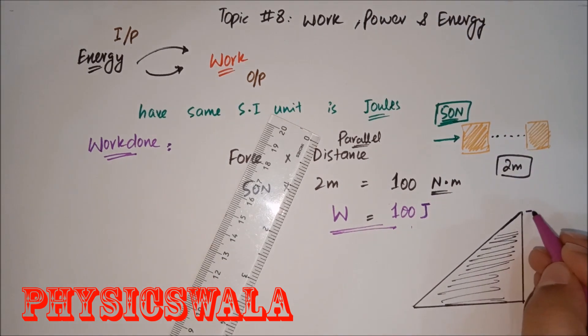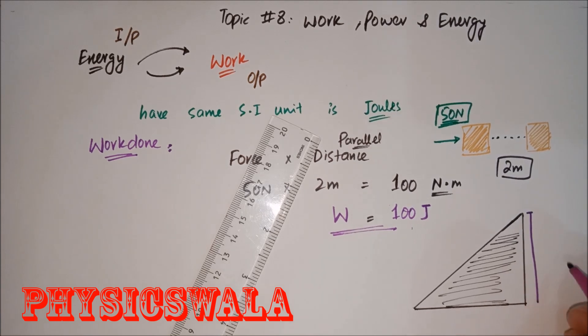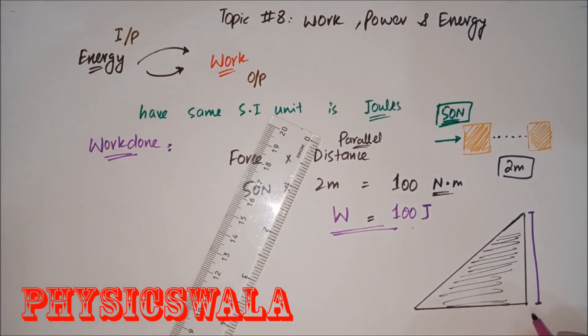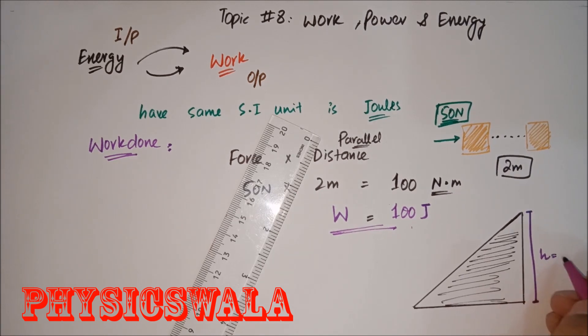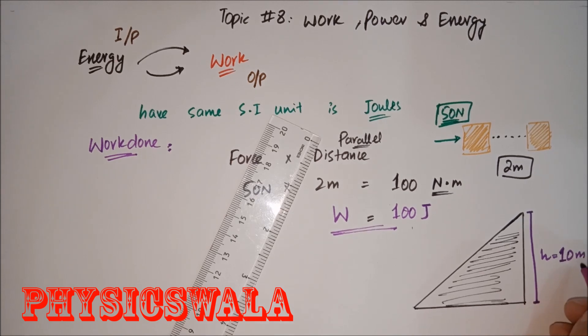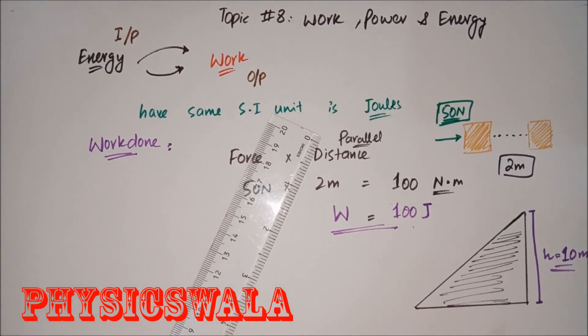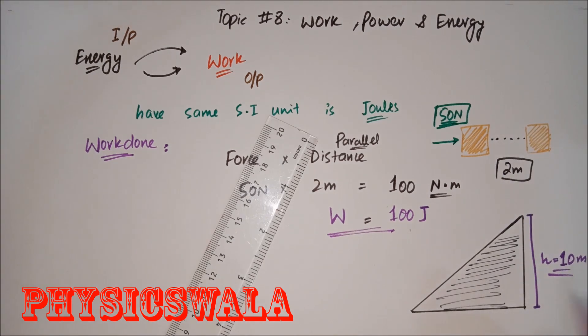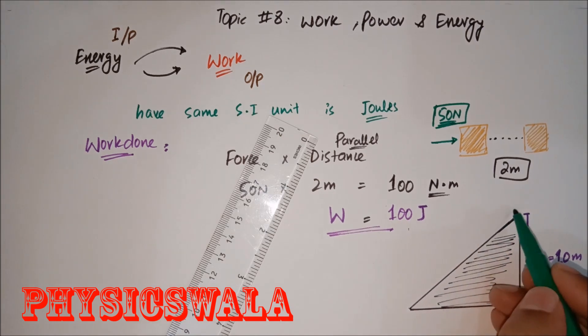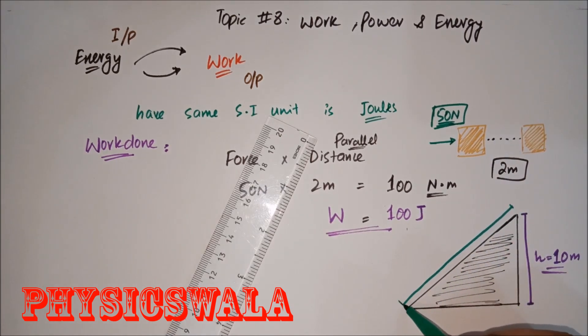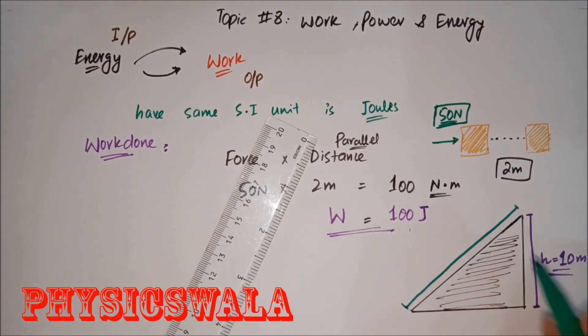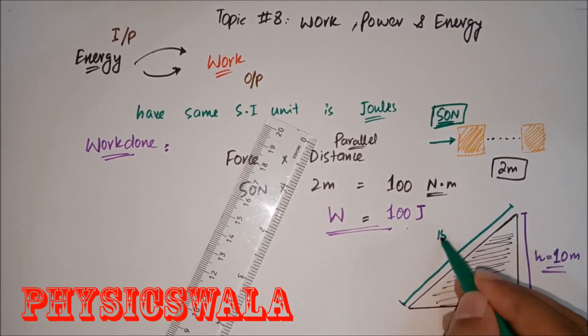One is they give you this dimension. One is they give you this height. Let's say this height they give you as 10 meters, for example. And then what do they do? They give you another dimension, maybe this distance, this is the hypotenuse, or they give you this as, let's suppose, 15 meters.